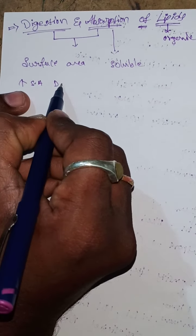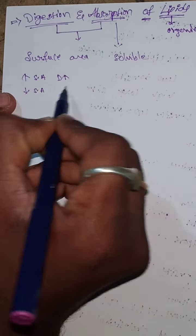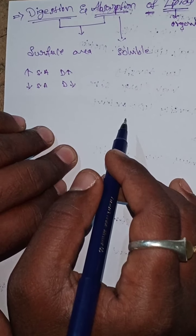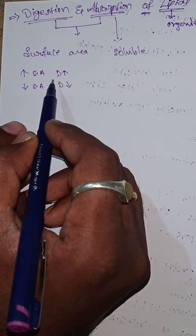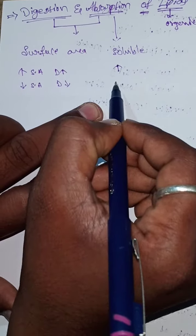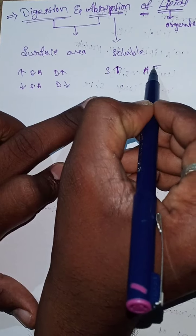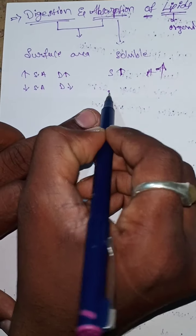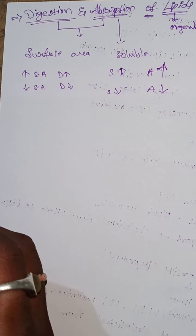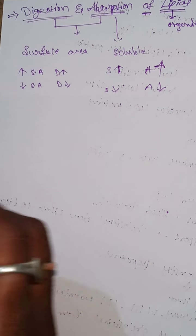When surface area increases, digestion also increases; when surface area decreases, digestion decreases. Similarly, when solubility of the digested products increases, absorption also increases; when solubility decreases, absorption also decreases.